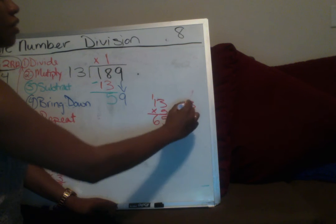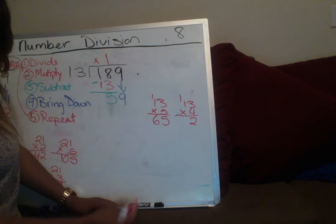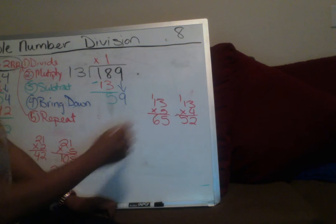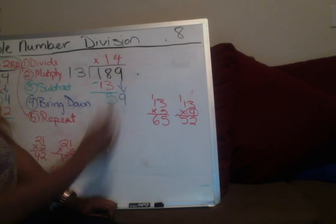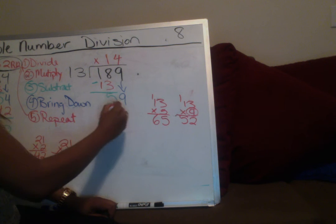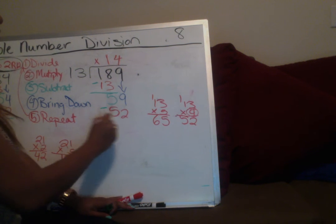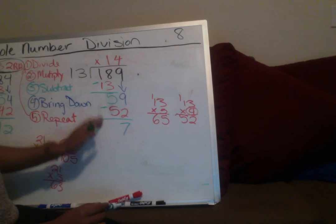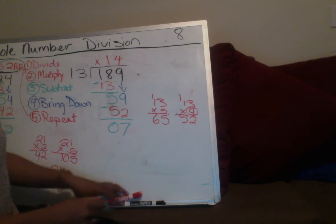Drop down to 4. 3 times 4 is 12, 4 times 1 is 4 plus 1 more is 5 — so 13 times 4 is 52. That looks good, so 4 goes up at the top. 13 times 4 is 52. Now subtract: 9 minus 2 is 7, 5 minus 5 is 0. So we have 14 remainder 7.